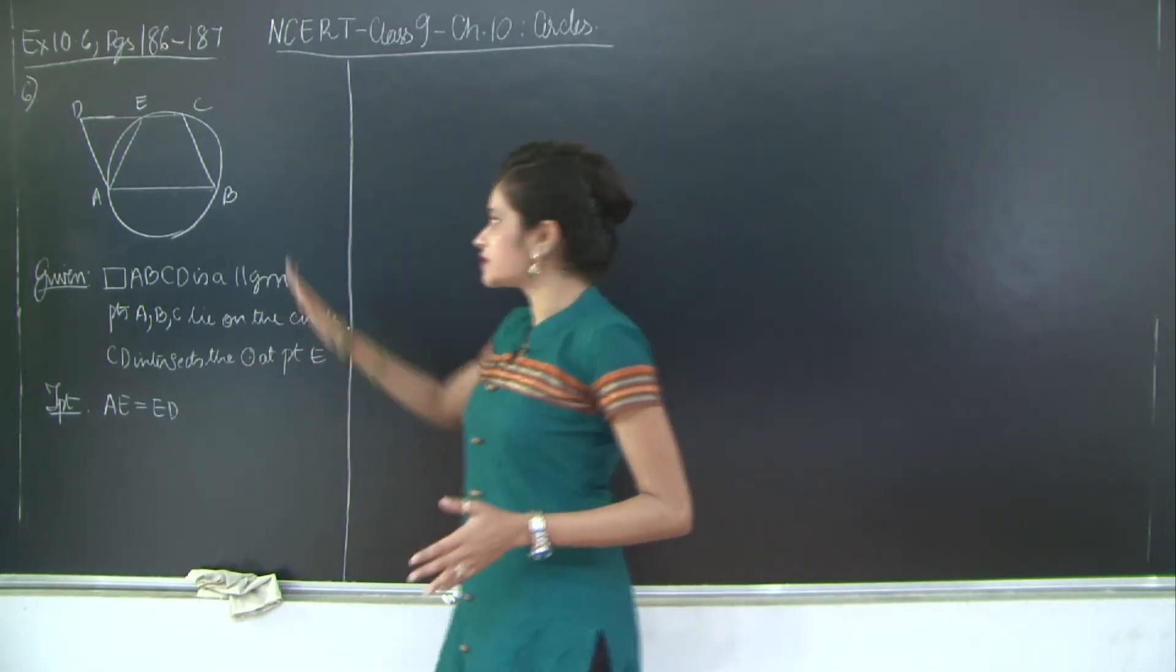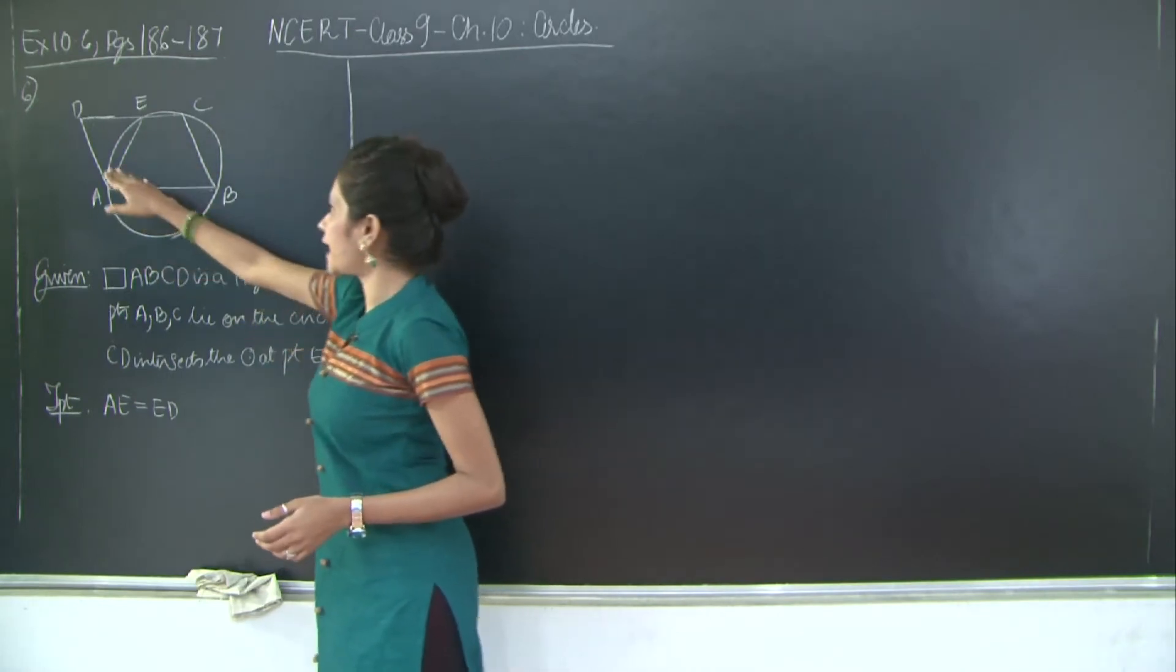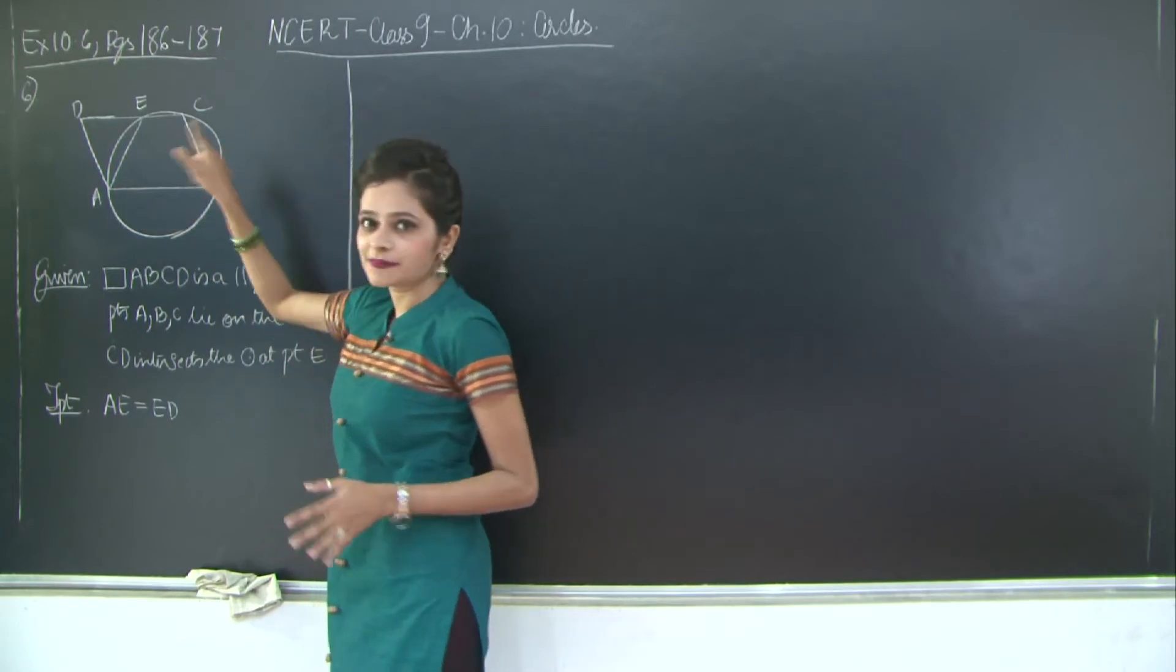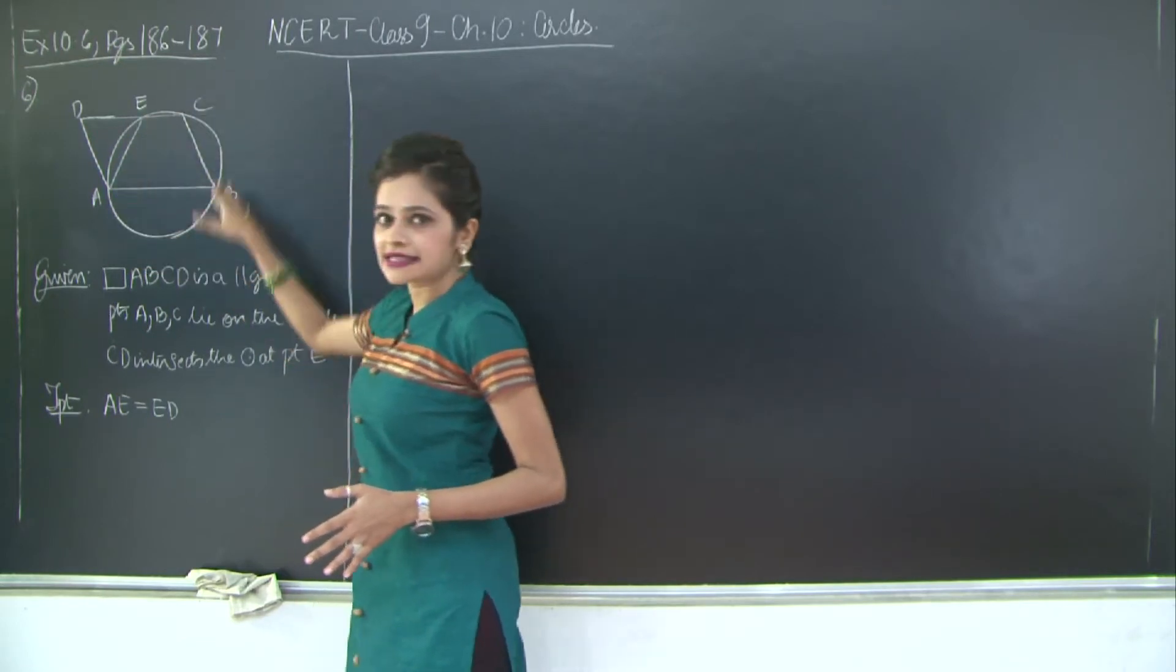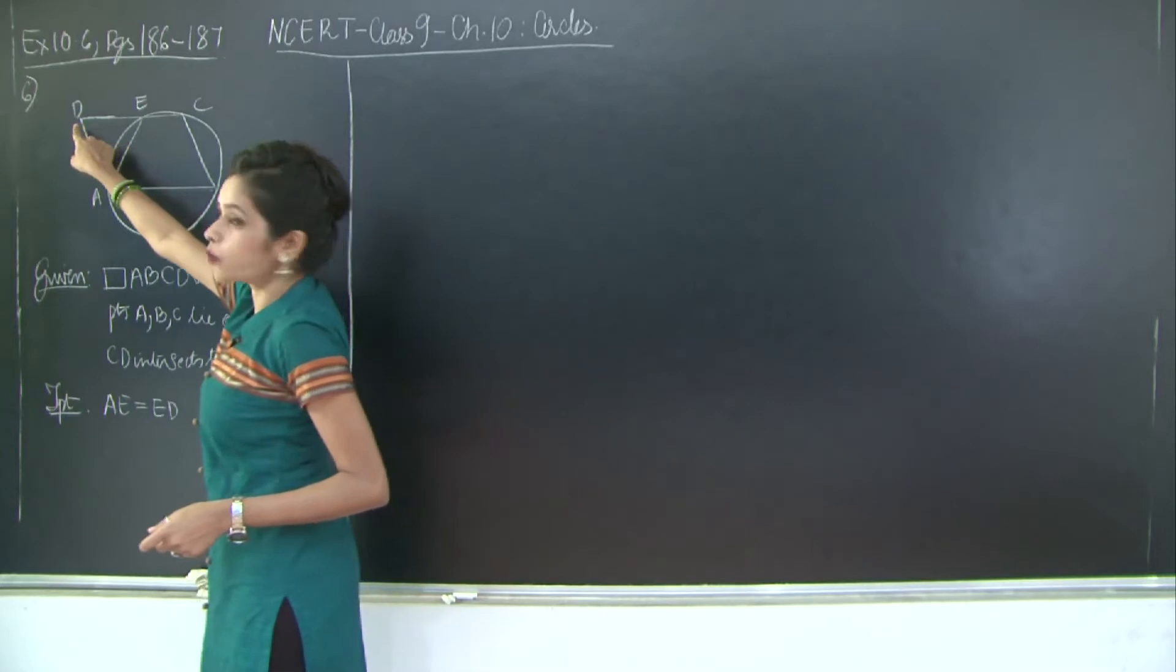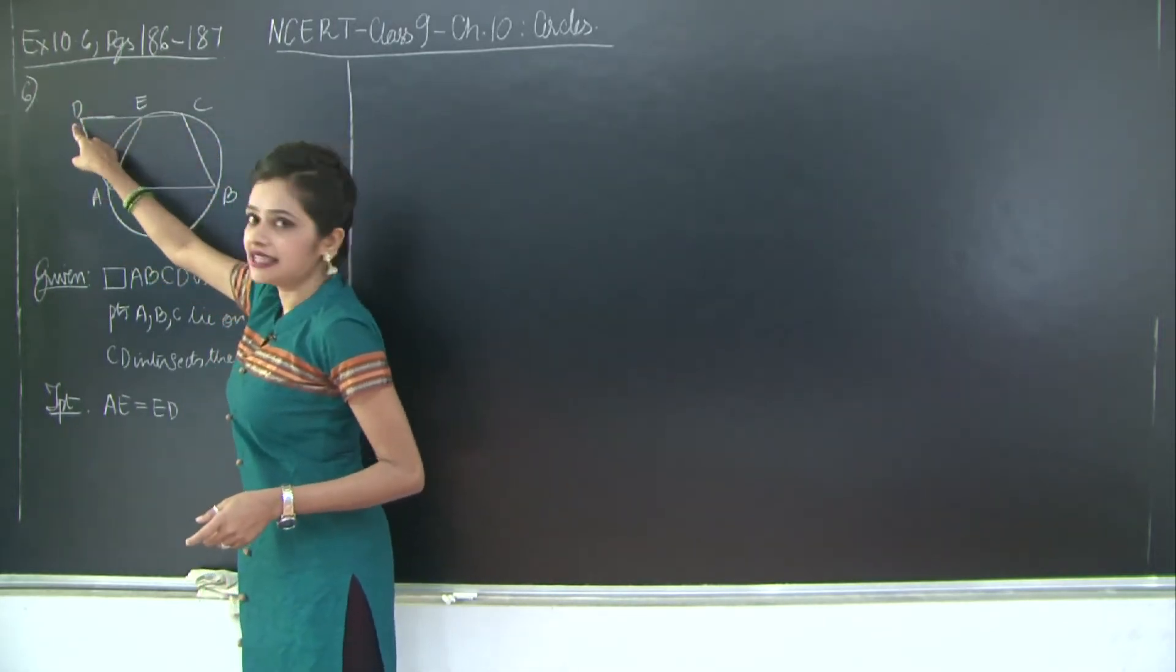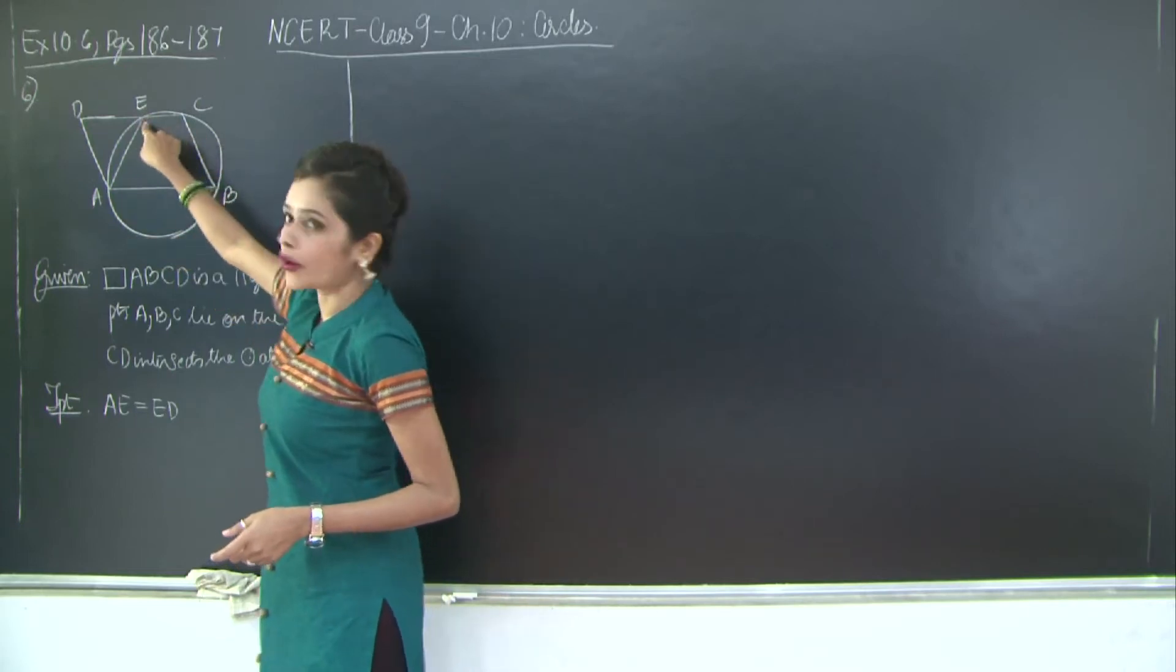So we have a circle such that there is a parallelogram ABCD. Three vertices A, B and C of this parallelogram lie on this circle. Then you have this point D which is exterior to the circle and the line CD intersects the circle at point E.